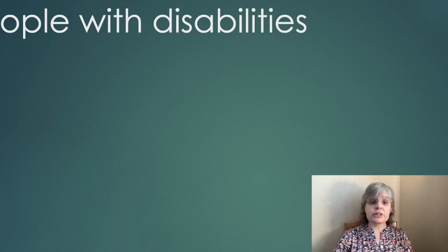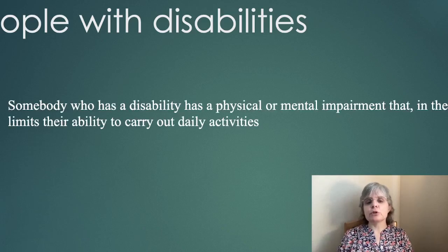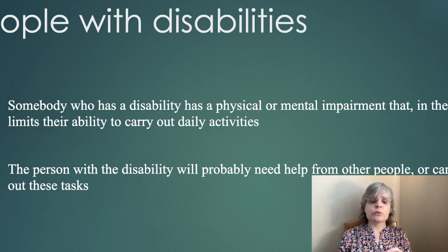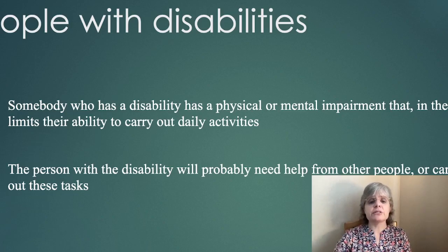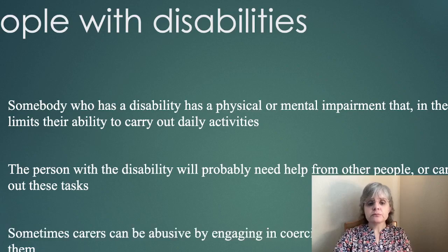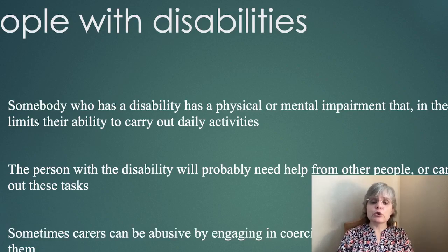Now we think about people with disabilities. Someone who has a disability has a physical or mental impairment that long-term limits their ability to carry out daily activities. The person with the disability will probably need help from other people or carers to carry out these tasks — very similar to what we were just describing with the older person who's not able, because of physical restrictions, to do some things. And sometimes carers can be abusive, engaging in coercive and controlling behaviour towards them.